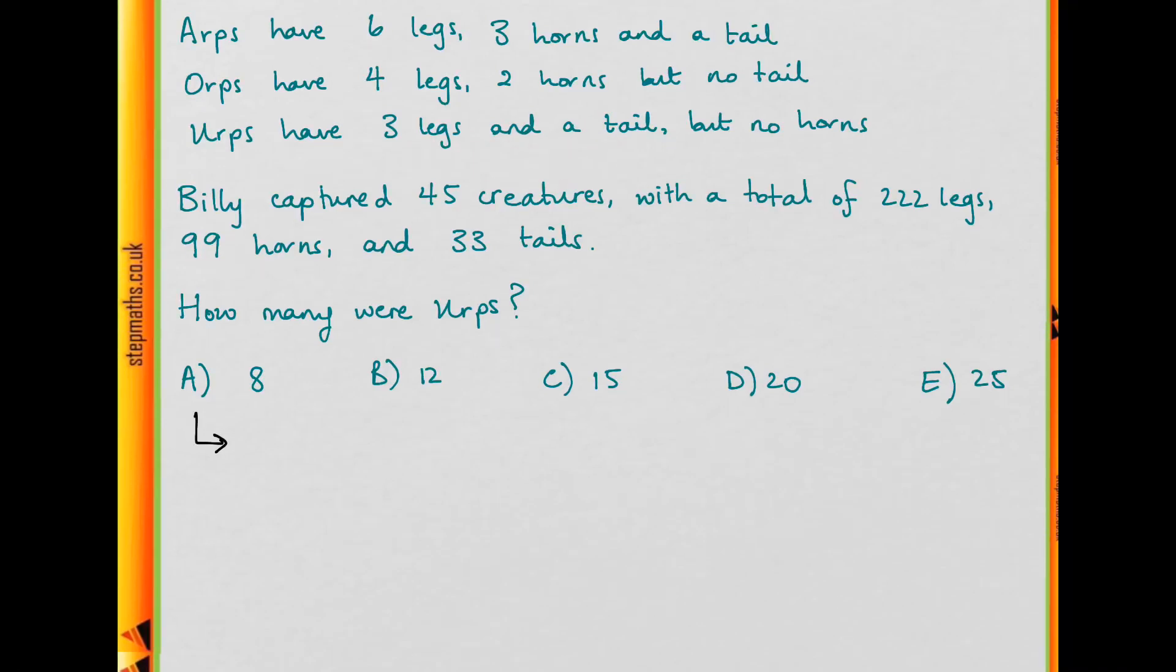So if we had 8 Earps, that would be 8 tails. And we have 33 tails in total, so there must be 33 minus 8 gives us 25. So we have 25 tails from other creatures. And Orps don't have any tails, so these must all come from Arps. And they all have one tail each, so we must have 25 Arps.